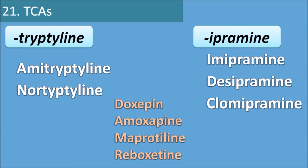These are the 21 drug categories with multiple suffixes, along with a few exceptions in each. Even though there are exceptions, if we practice drug names in this way, it becomes easy to remember drugs and their categories.